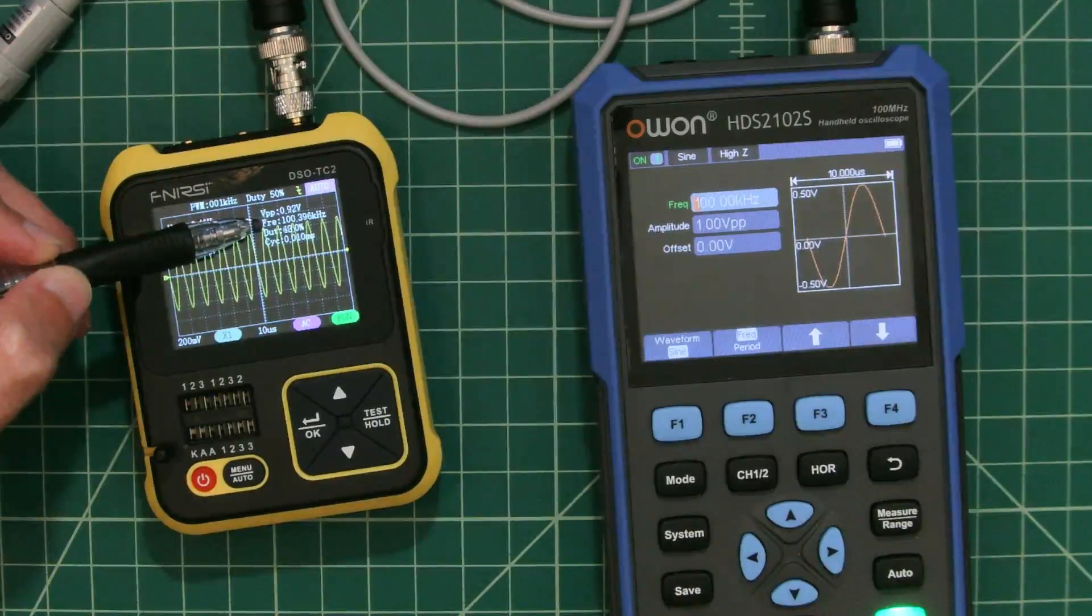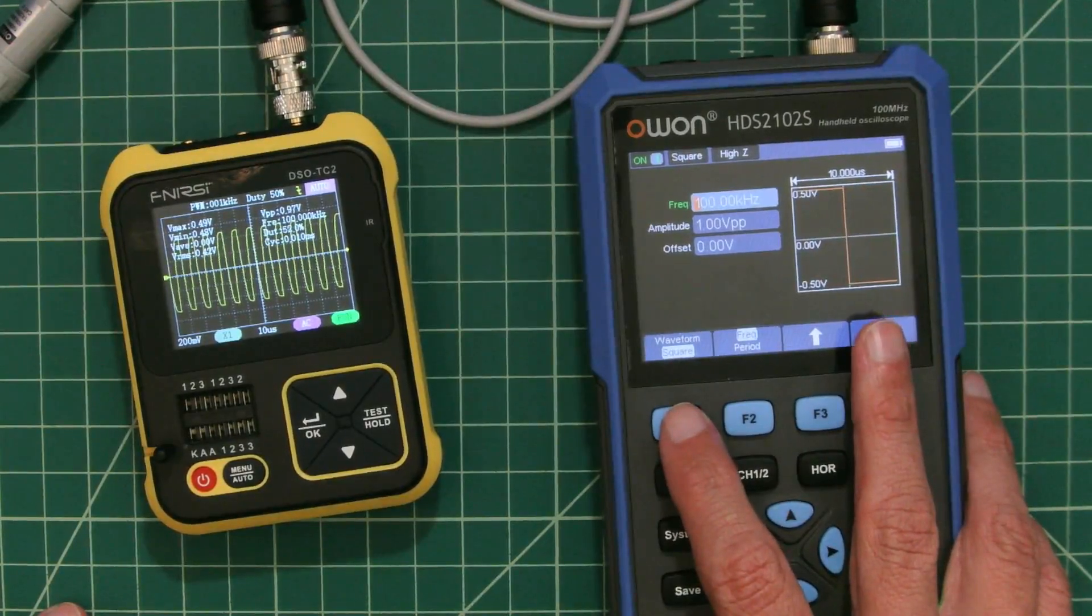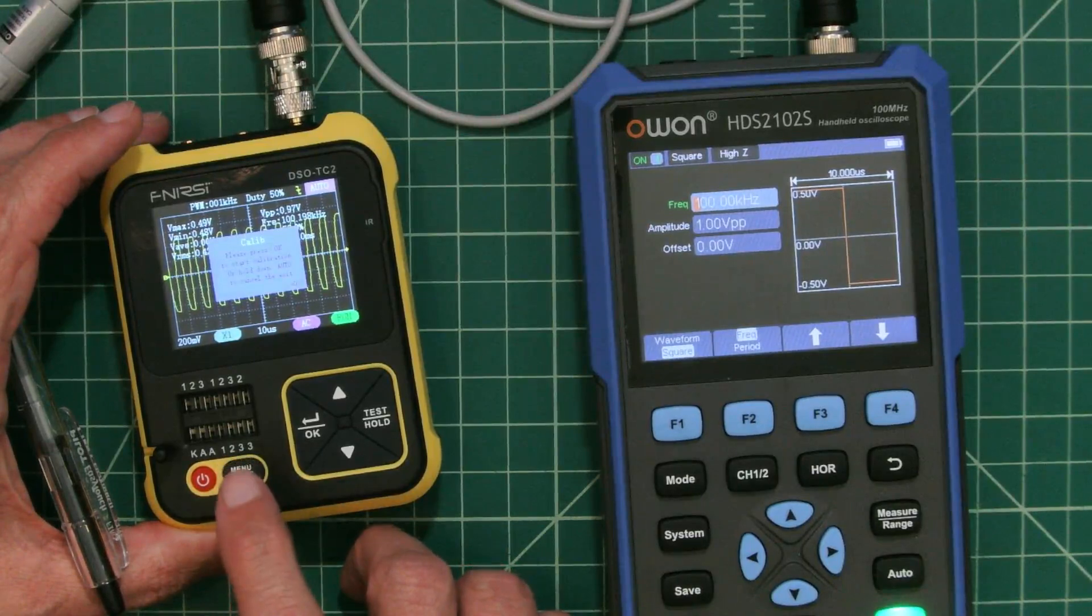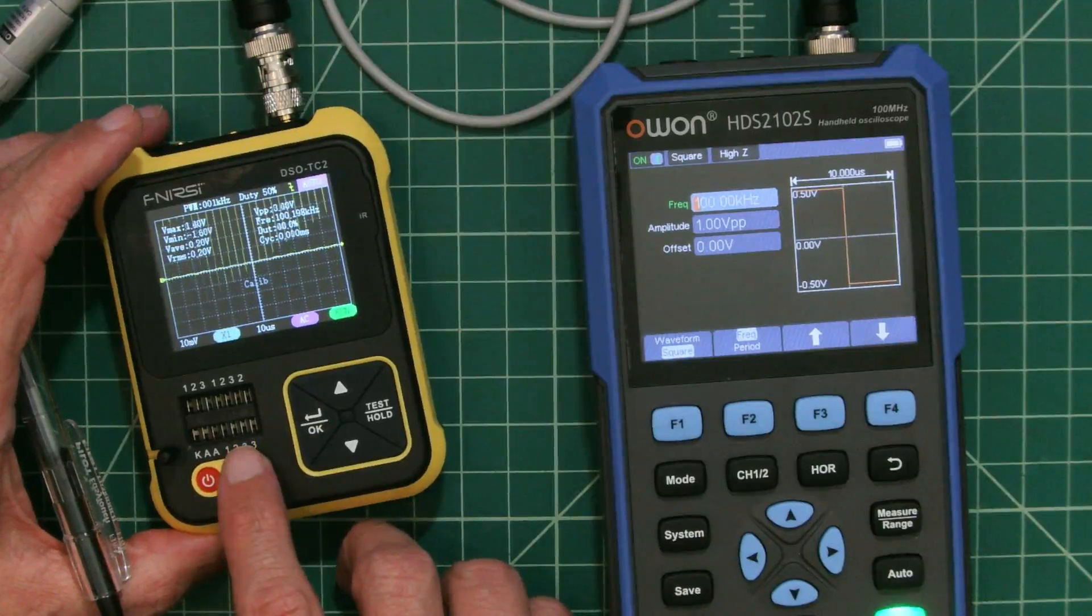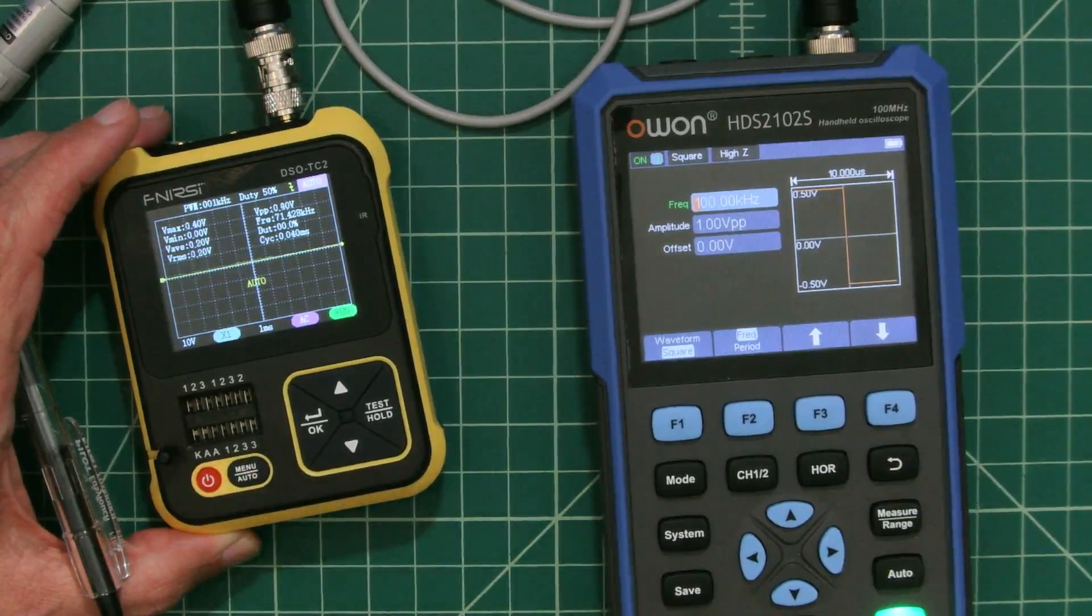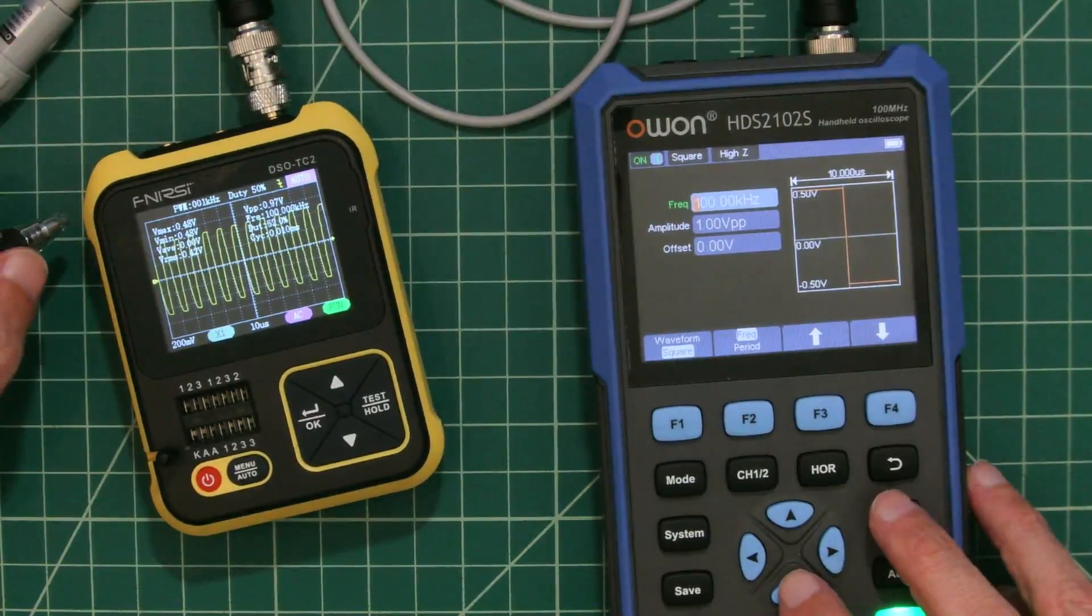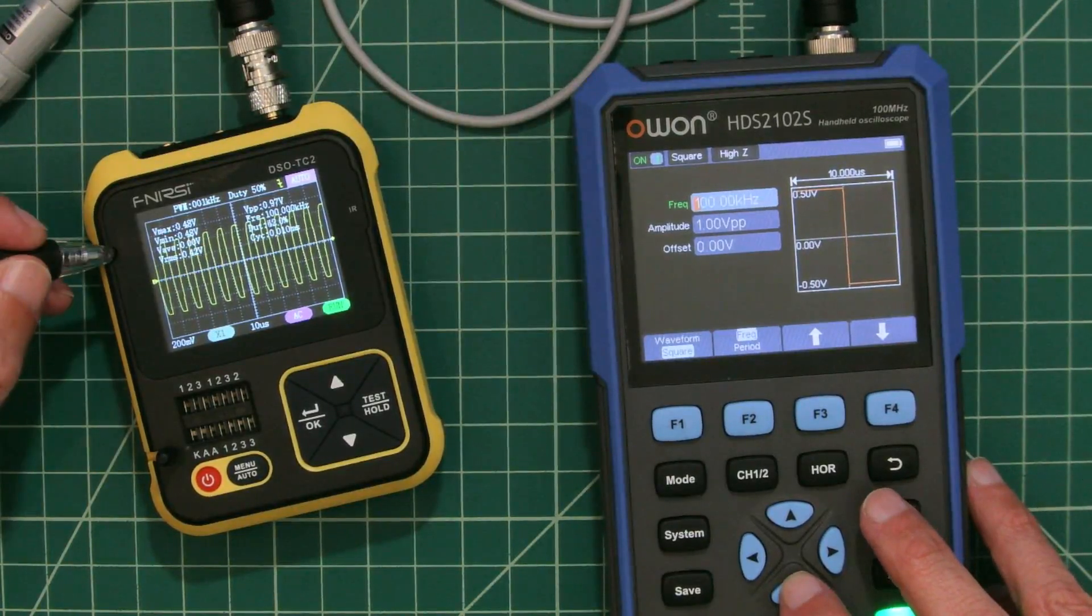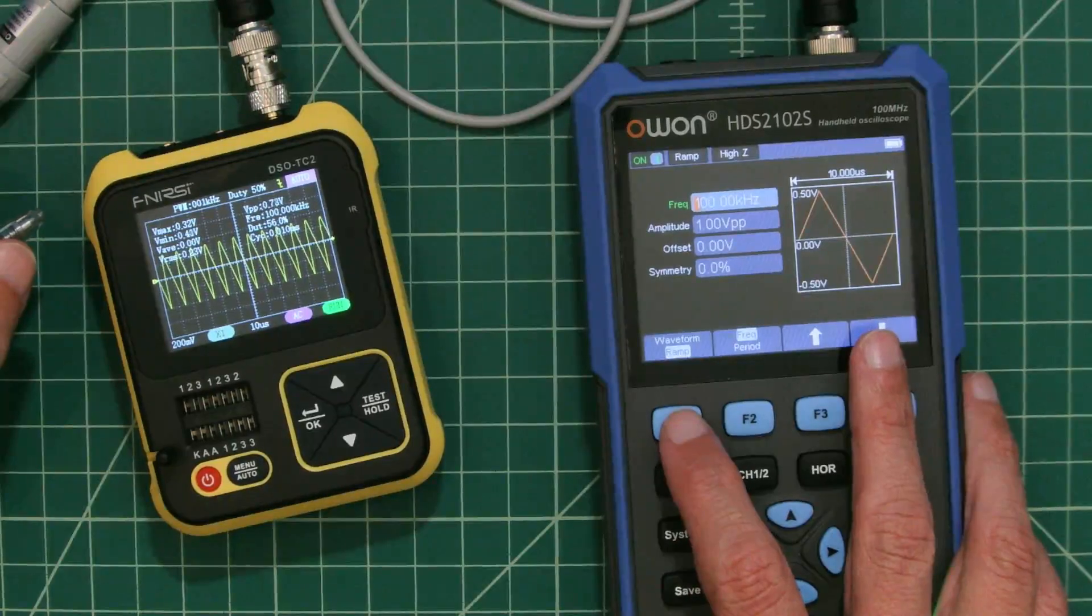I hit the auto button and it went ahead and adjusted. You can see our voltage peak to peak here is reading at 0.9 volts. Over here it's saying 0.1 volts. Here you can see the voltage peak to peak and here you can see the frequency. Let's go back over here and change our sine wave to a square wave.